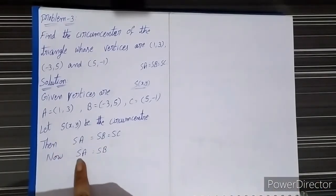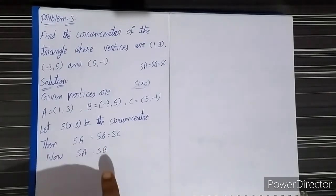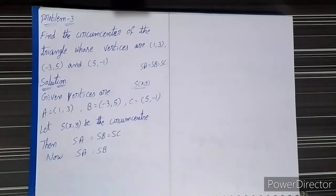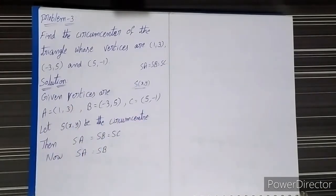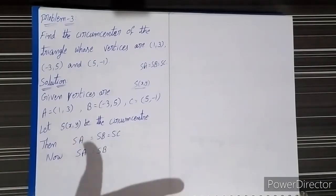SA means the distance between two points. If (x1, y1) and (x2, y2) are any two points, then the distance between these two points is the square root of (x2 - x1)² + (y2 - y1)². This is the distance formula. To cancel the root, we square both sides of the equation.